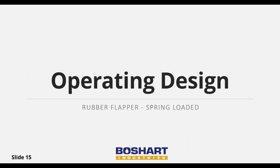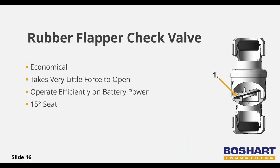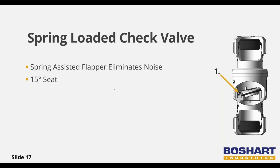Beauchard offers two operating designs of swing check valve: the gravity-type flapper and a spring-assisted flapper design. The gravity design operates by gravity — the pump forces water through, but gravity and the weight of the water push back to close it. Benefits include being more economical and requiring very little force to open, so it can run on a battery-powered backup pump in emergencies. Both designs feature 15-degree seats, which reduce water hammer and flapper noise by reducing the time it takes for the flapper to close.